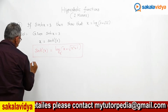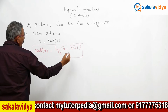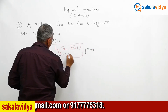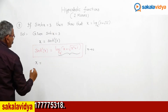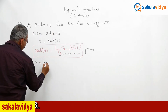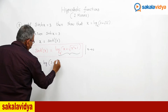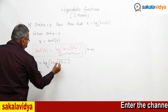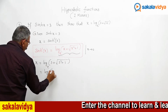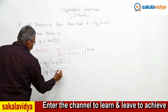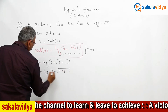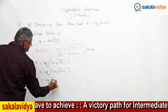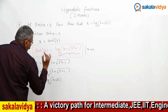Using this formula, x is replaced by 3. We get x equals log of 3 plus root of 3 squared plus 1, to the base e. Now 3 squared is 9, so 9 plus 1 is 10. Therefore x equals log of 3 plus root 10, to the base e.